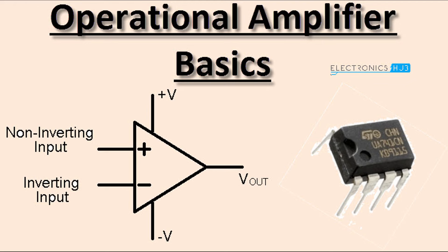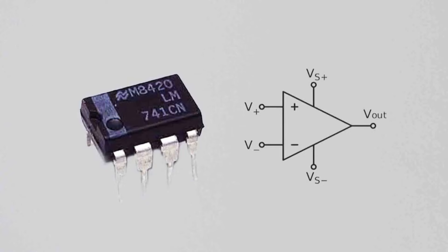Operational amplifiers, commonly known as op-amps, are highly versatile analog electronic devices widely used in electronic circuits for various applications. They are designed to amplify voltage signals and are known for their high input impedance, low output impedance, and differential inputs. Op-amps are often used to perform tasks such as amplification, signal conditioning, filtering, mixing, and mathematical operations. Here are some key characteristics and features of operational amplifiers.